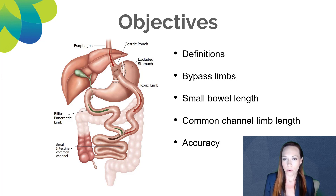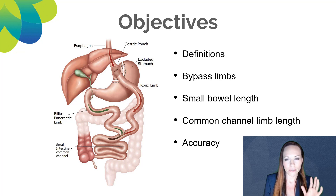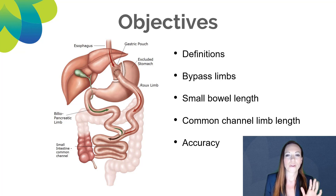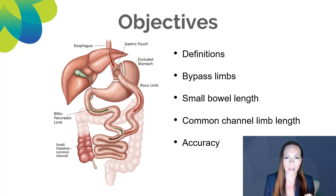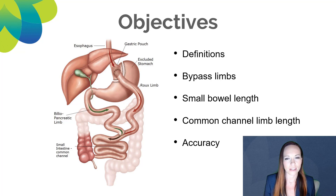Let me go over what we're going to be talking about in the next 10 minutes. This could be a two-hour talk, but we're going to break it down into 10 minutes. We're going to start off by talking about some definitions, go over bypass limbs and what they each mean, talk about small bowel length, briefly touch on common channel limb length, and then talk about accuracy at the end — a little fun topic.